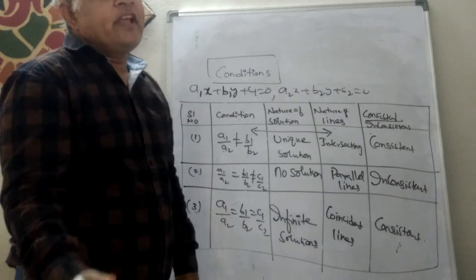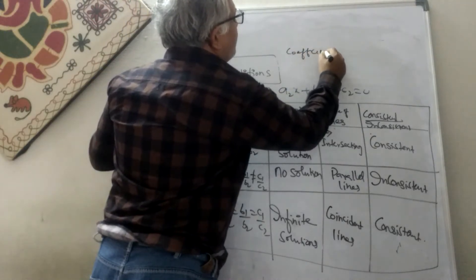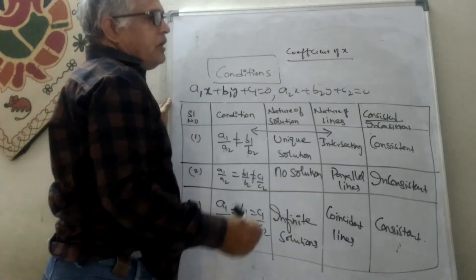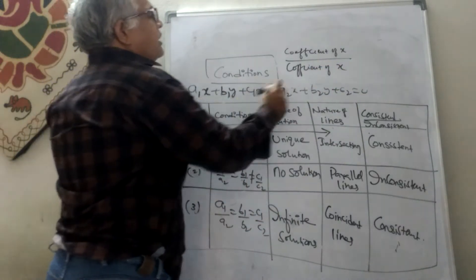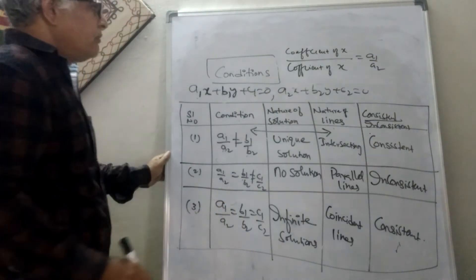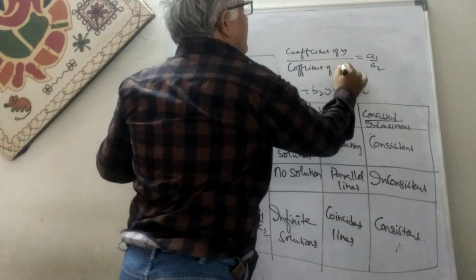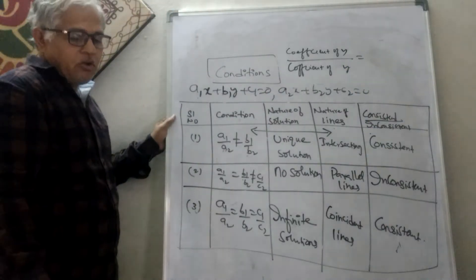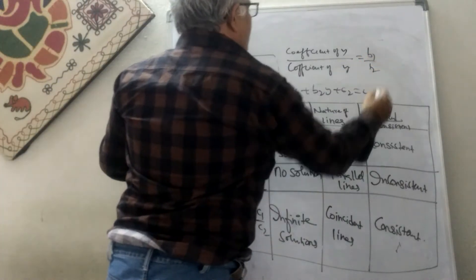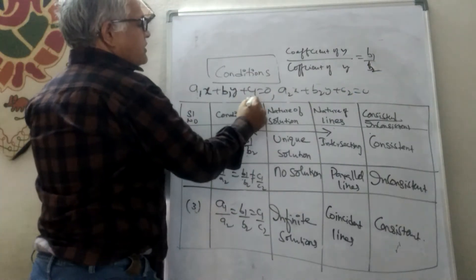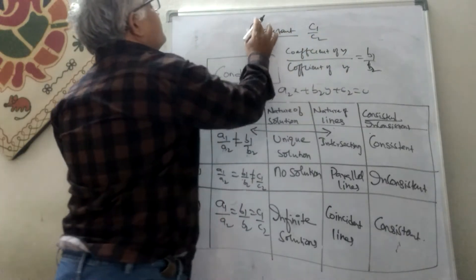You have to calculate three ratios. First, the coefficient of x in the first equation divided by the coefficient of x in the second equation: a1/a2. Similarly, the coefficient of y in the first equation divided by the coefficient of y in the second equation: b1/b2. Then, the constant term in the first equation divided by the constant in the second equation: c1/c2.